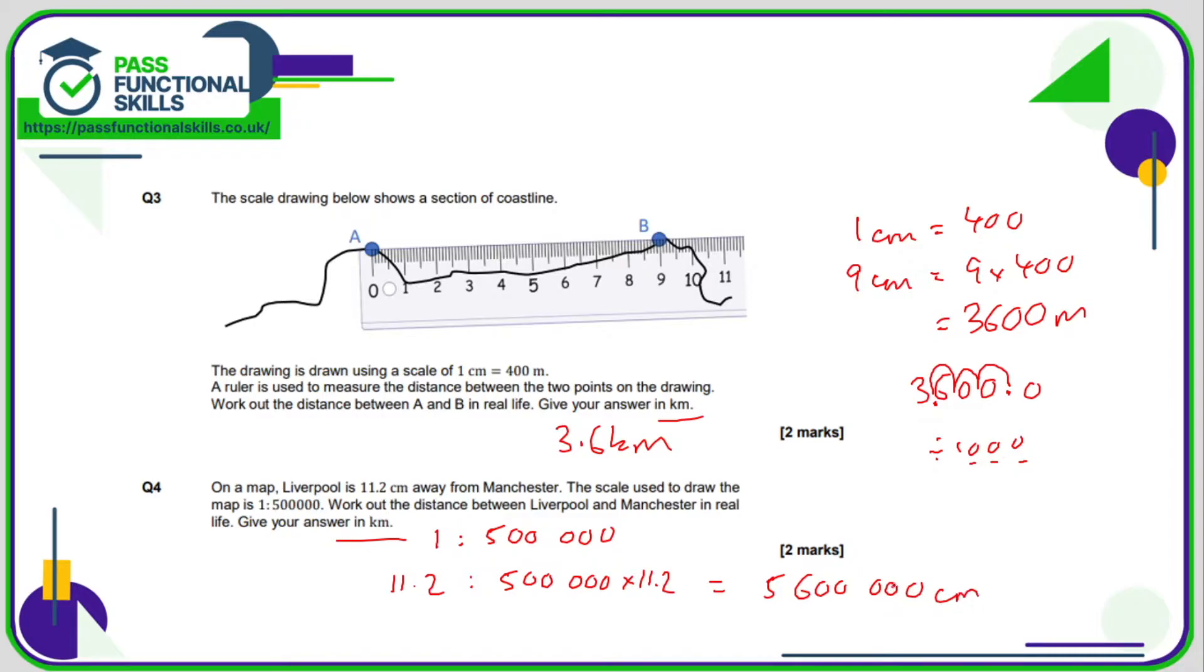If this is centimeters, let's turn it into meters by dividing by 100, which is chopping off two zeros. And now let's turn it into kilometers by dividing by 1,000, which is the same as chopping off three zeros. So the answer is 56 kilometers.